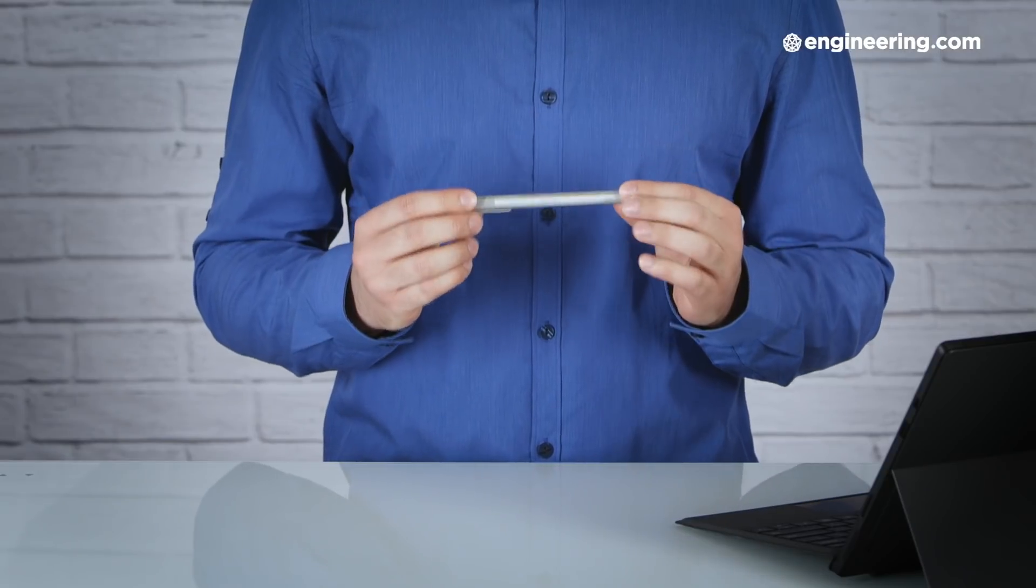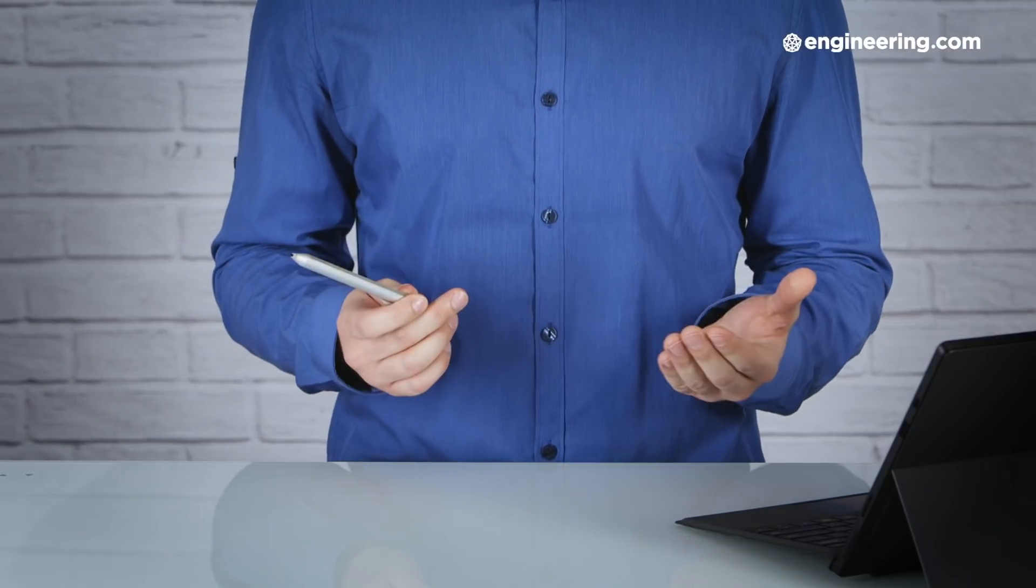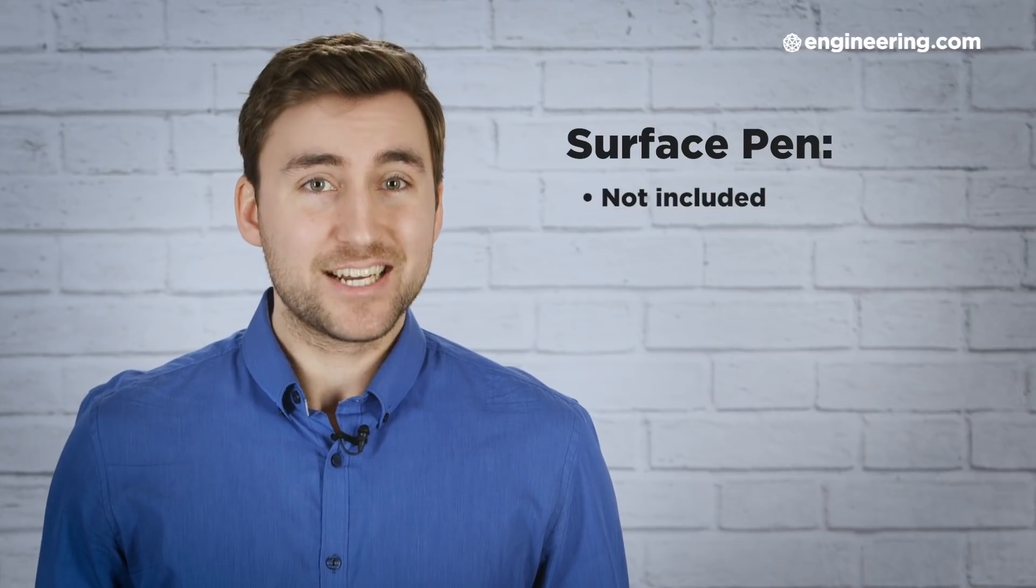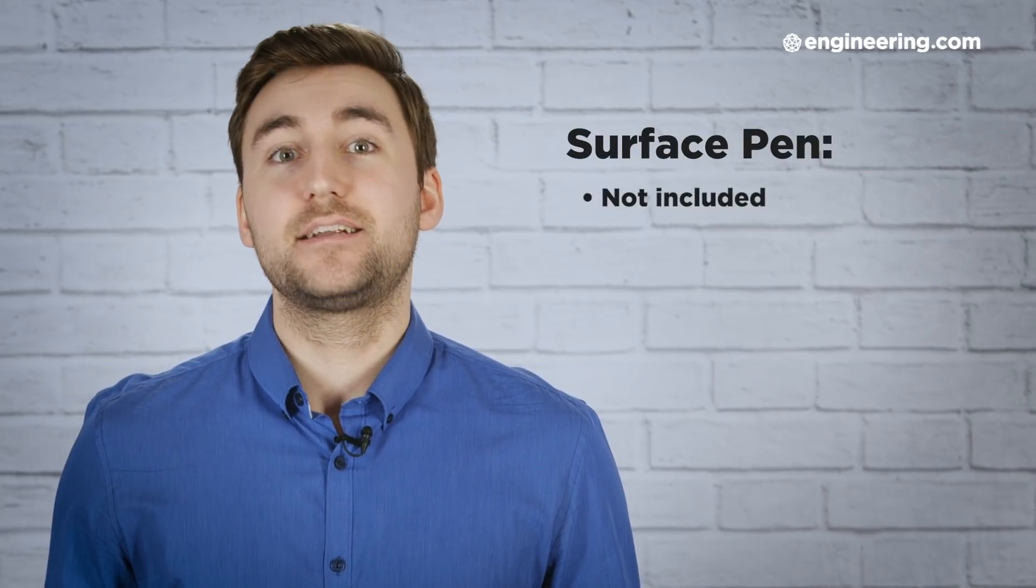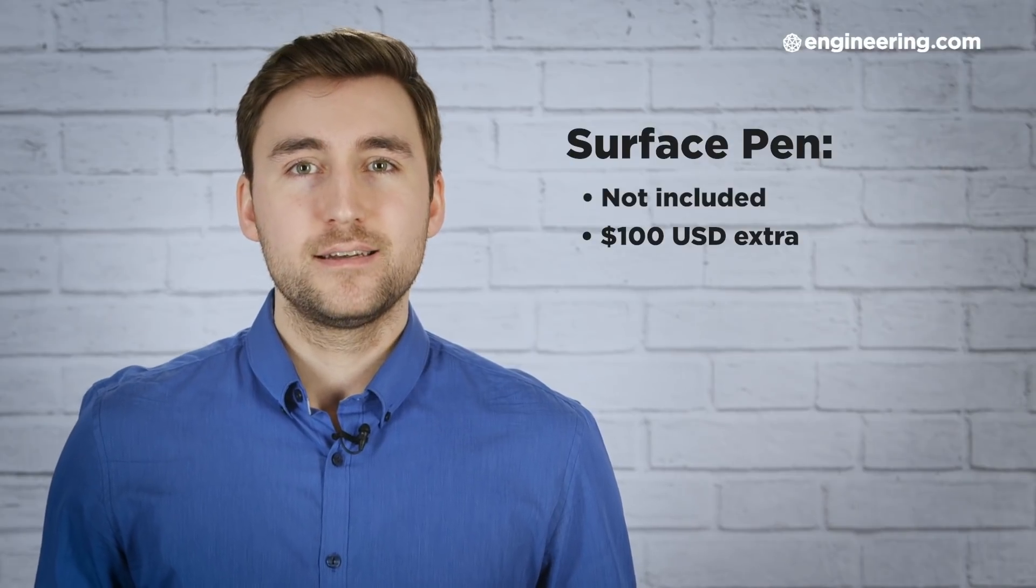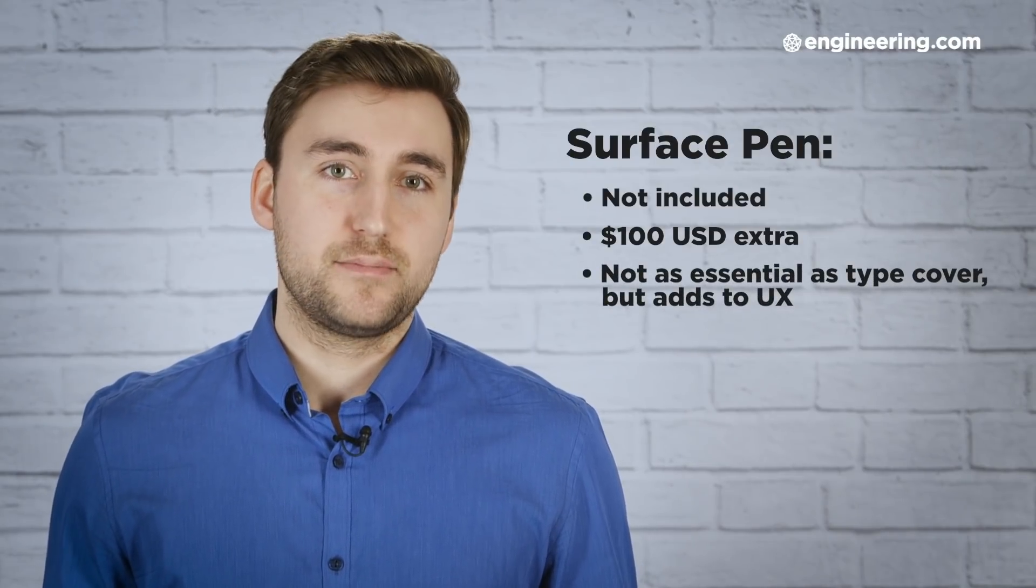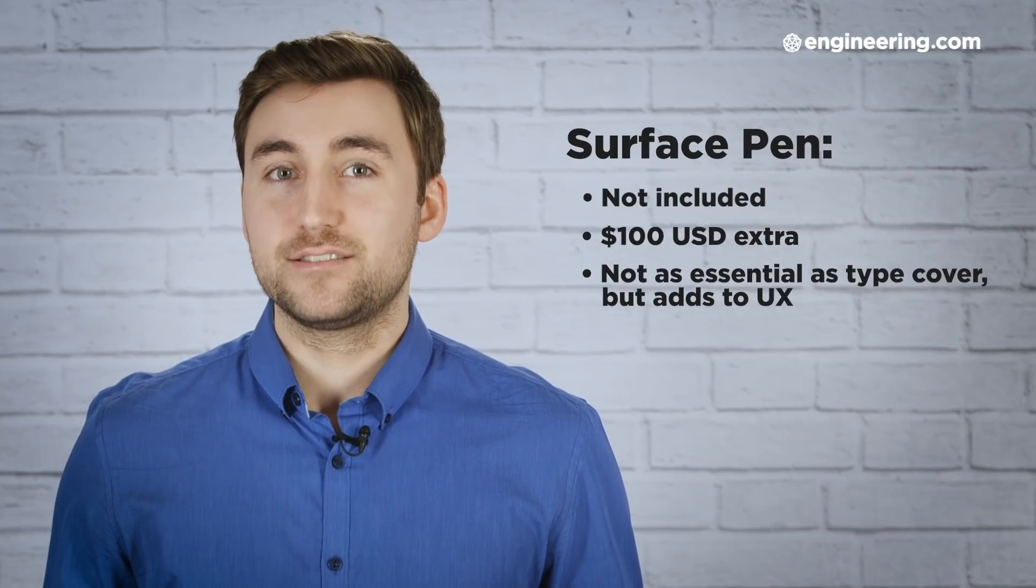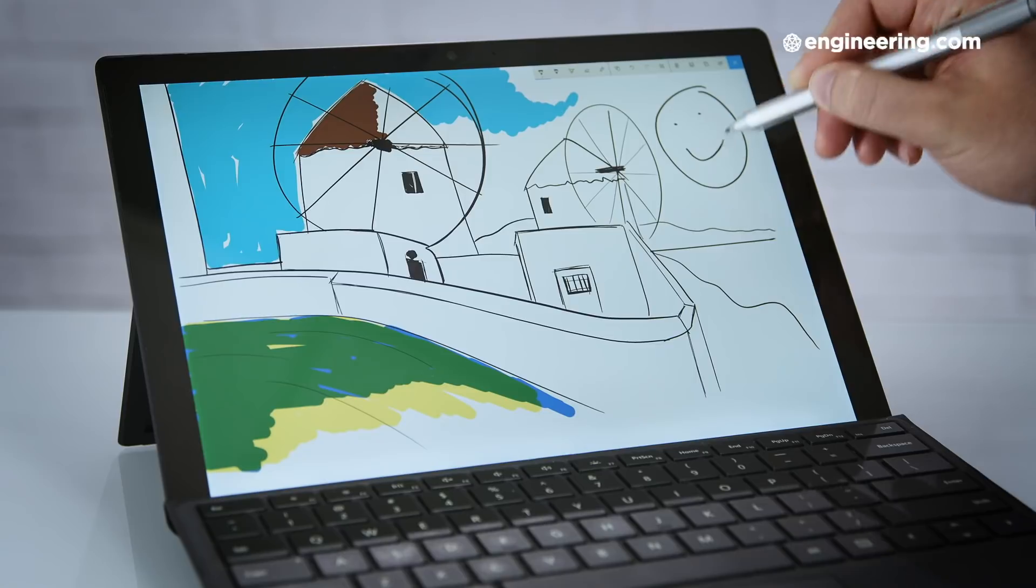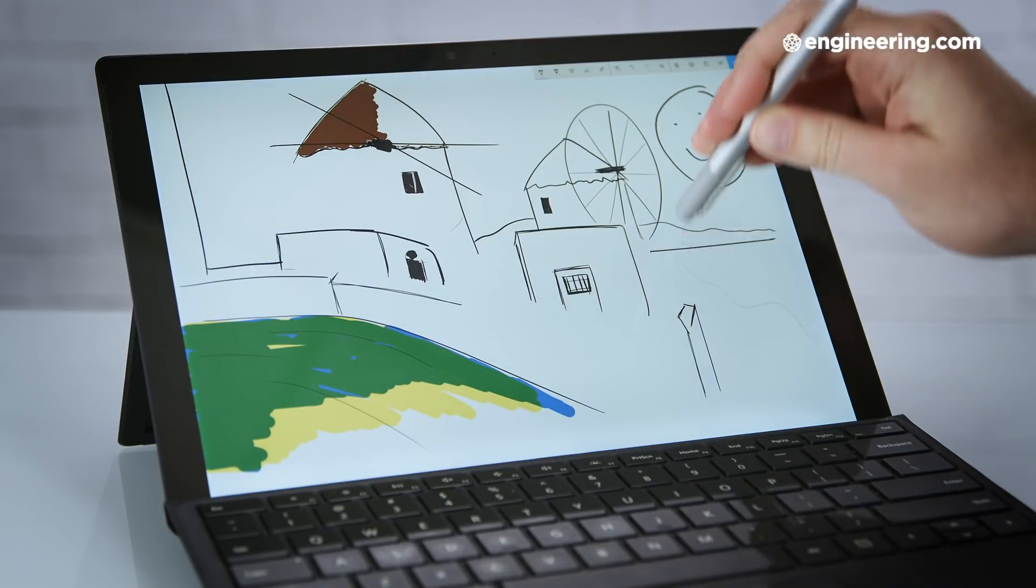The Surface Pro 6 also has an accompanying stylus called the Surface Pen. The one I have here is an older generation model that I happen to own, because Microsoft also doesn't include the Surface Pen in the box. That's extra frustrating to me, because they actually used to, but I guess they decided it makes more fiscal sense to sell it as a $100 accessory. Now the Surface Pen isn't quite as essential as the Type Cover, but I personally find it adds a lot to the user experience, especially as someone who likes to take notes by hand and annotate documents and occasionally doodle.